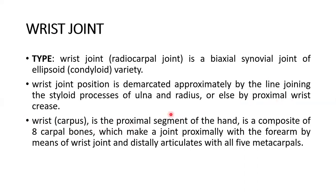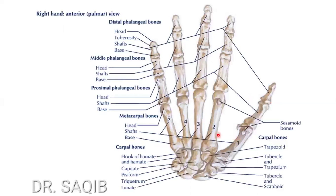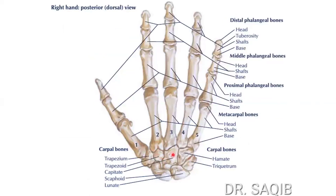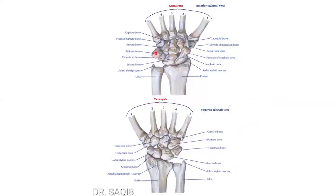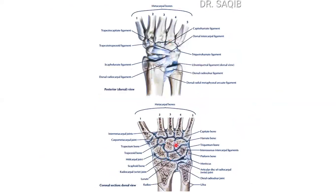The wrist or carpus is the proximal segment of the hand, composed of eight carpal bones, which make a joint with the forearm by means of the wrist joint, and distally articulate with all five metacarpals. Here you can see the metacarpals one through five articulating with the distal row of the carpal bones — shown in both posterior and other views.